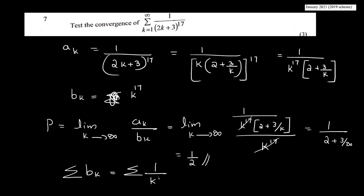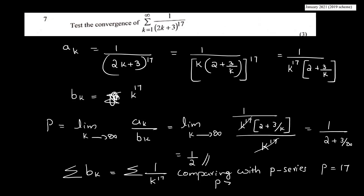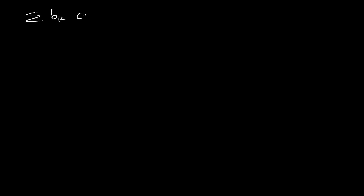Comparing with the p-series: summation of 1 by k raised to 70. The p value is 70. Since p is greater than 1, the p-series converges. Taking the limit as k tends to infinity, we get 1 by 2 plus 0, which is finite and nonzero. Therefore, by the limit comparison test, the summation of a_k also converges.